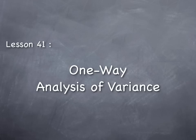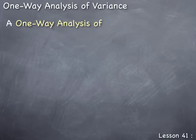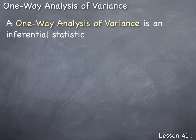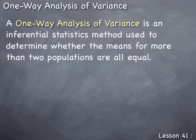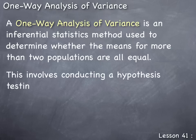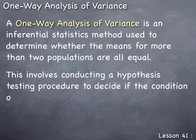Lesson 41: One-Way Analysis of Variance. A one-way analysis of variance is an inferential statistics method used to determine whether the means for more than two populations are all equal. This involves conducting a hypothesis testing procedure to decide if the condition of μ₁ = μ₂ = … = μₘ is valid or not.